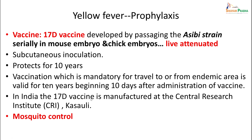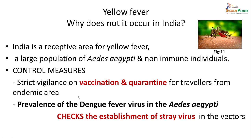Why does yellow fever not occur in India, though we have abundant Aedes aegypti? One reason is strict vigilance on vaccination and quarantine for travelers to endemic areas. Also, the prevalence of the dengue virus in Aedes aegypti checks the establishment of yellow fever virus in the vectors — there is enough presence of dengue fever virus in these mosquitoes, which checks the presence of yellow fever virus in many of them.